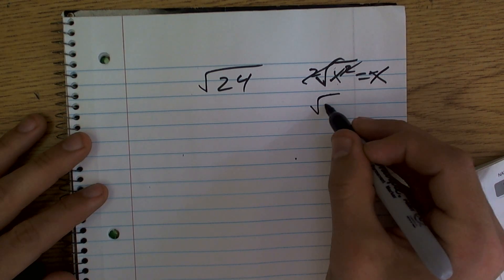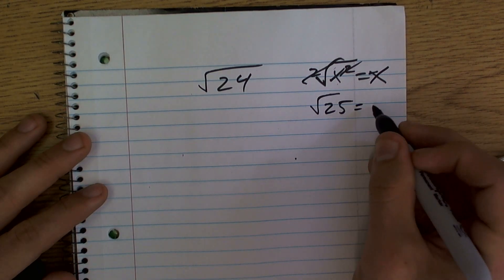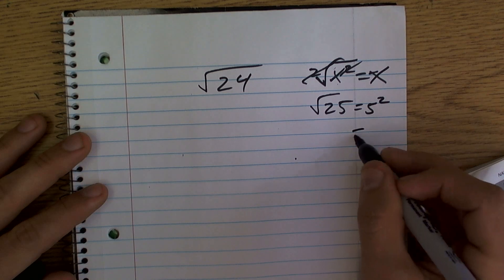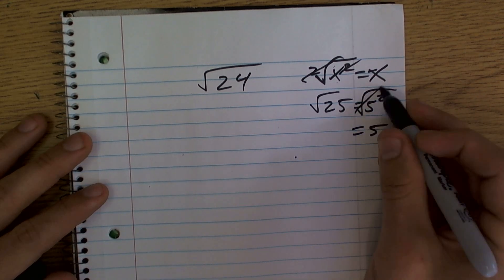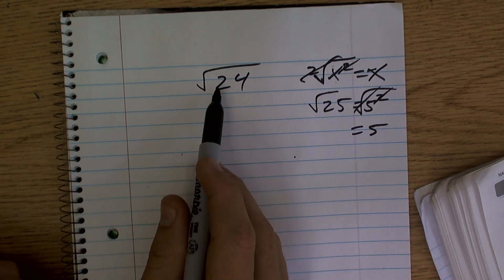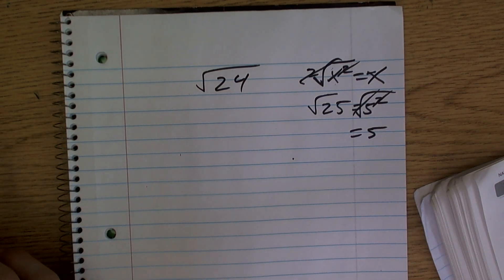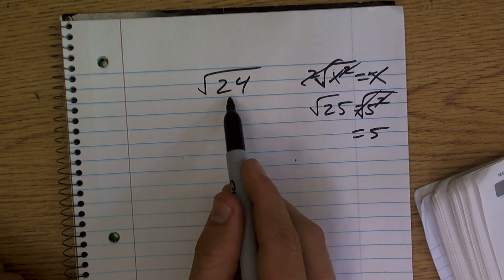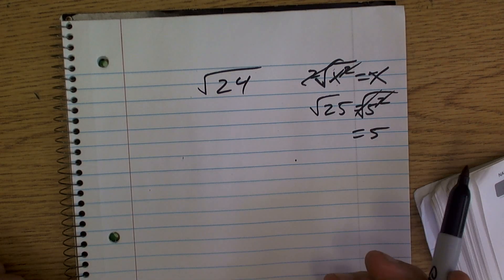So that was very helpful when we had like the square root of 25 because we know we could rewrite that as 5 squared, or the square root of 5 squared, which equals 5. Well, here we've got a problem because 24 is not a square number. We can't rewrite this as a number squared equals 24 where we could just cancel them out.